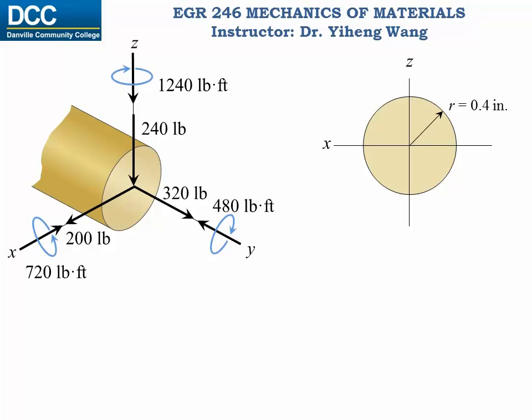Either way, we have determined all six internal reactions and marked their magnitudes and directions at the cross section passing through point C. Now we are ready to determine the stresses at point C as caused by these six internal reactions.